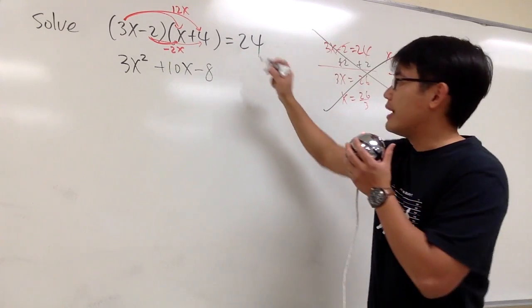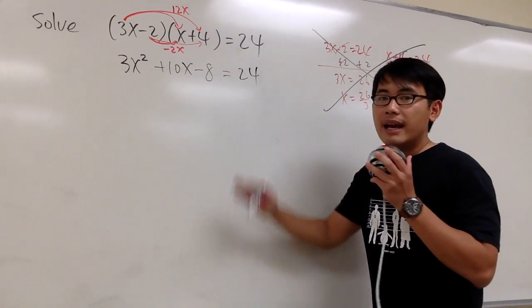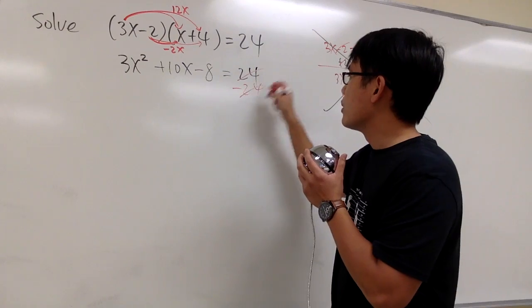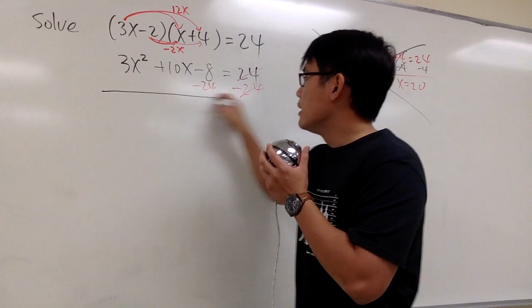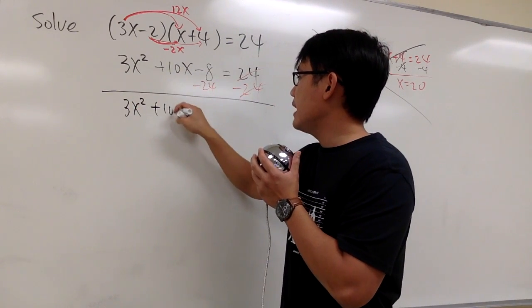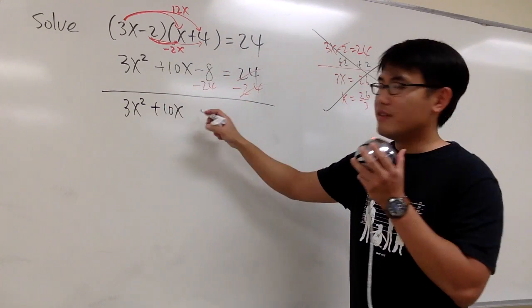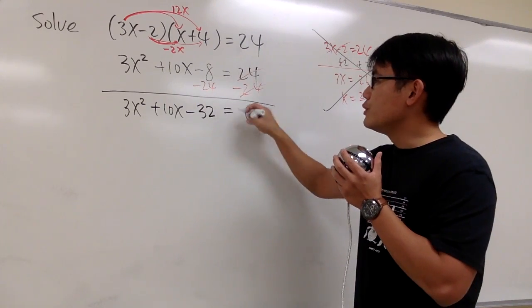And then we continue equals to 24. And let's subtract 24 on both sides. So with minus 24 here, they cancel, and then I put on minus 24. And we can combine the terms. So we have 3x squared plus 10x, and minus 8 minus 24, that will give us minus 32. And that's equal to 0.